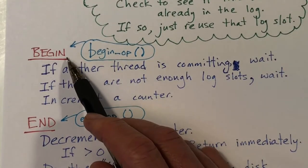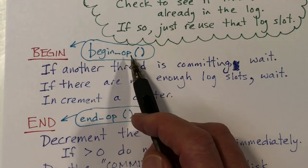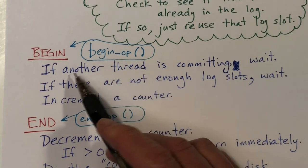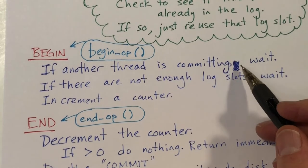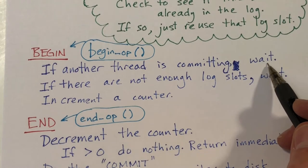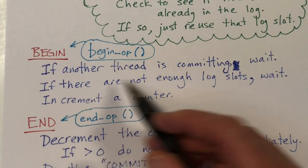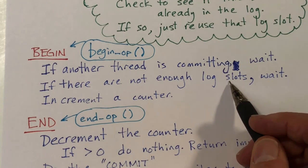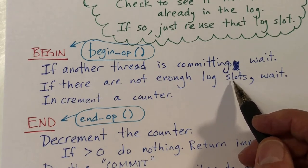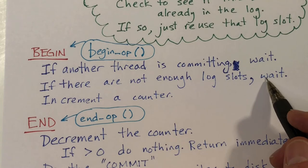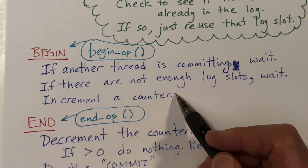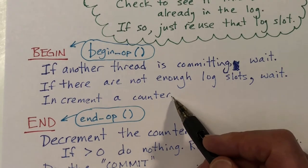Every transaction must begin with begin_op. If another thread is in the middle of a commit, begin_op will just wait — it goes to sleep until the commit is done. It also checks how many slots are available in the log. If we don't have enough resources to complete the biggest possible transaction, begin_op will sleep until other things have finished and it is reawakened. Finally, when everything is okay, it increments a counter that tells how many transactions are currently in progress.